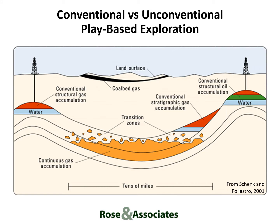When we use the term unconventionals, we're talking about low permeability reservoirs that generally require hydraulic fracture stimulation to produce wells at commercial rates. But whether we're dealing with conventional or unconventional accumulations, play maps are the basic tool for exploration decision making. In conventional exploration, we focus on identifying discrete structural and stratigraphic accumulations and quantifying both their size and chance of discovery. For unconventional exploration, where the chance of drilling a dry hole is relatively low, we focus on identifying areas where we believe the average well recovery will be sufficient for commercial success.